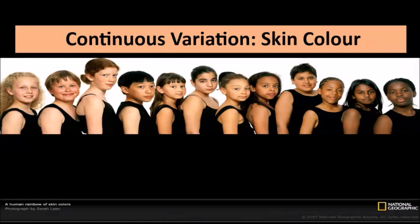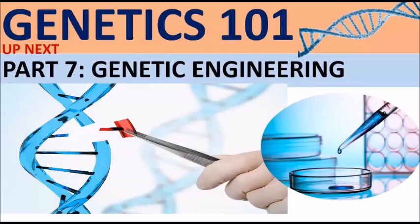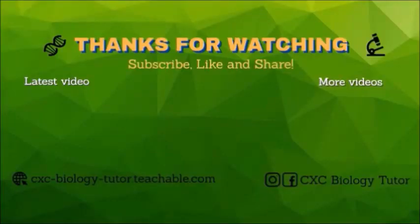Hopefully you now have a better understanding of the different types of variation: genetic variation, environmental variation, and also discontinuous versus continuous variation. The next topic we're going to cover is genetic engineering, so stay tuned for that in the next video. If you found this video helpful, feel free to subscribe, like, and share, and don't forget to hit that notification bell.